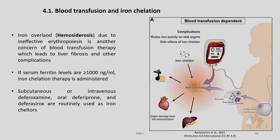Iron overload due to ineffective erythropoiesis is another concern of blood transfusion therapy, leading to liver fibrosis and other complications. If serum ferritin levels are more than 1000 nanograms per milliliter, iron chelation therapy is administered. Subcutaneous or intravenous deferoxamine, oral deferiprone, and deferasirox are routinely used as iron chelators.